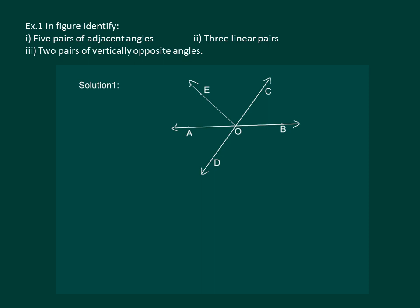Let us read the question. In the given figure, identify five pairs of adjacent angles, three linear pairs, and two pairs of vertically opposite angles. So let us start with the first one, which is to find five pairs of adjacent angles.